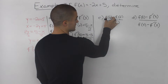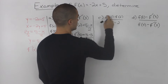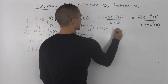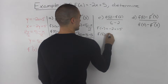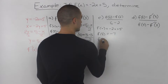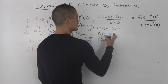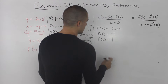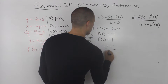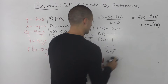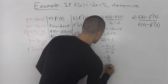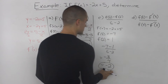Moving on to part c, we need to compute [f(6) minus f(2)] all over 6 minus 2. Let's find f(6) and f(2) separately using f(x) equals negative 2x plus 5. For f(6): negative 2 times 6 is negative 12, plus 5 is negative 7. For f(2): negative 2 times 2 is negative 4, plus 5 is positive 1. So combining: negative 7 minus 1 is negative 8, over 6 minus 2 which is 4, giving us negative 2. So the answer to part c is negative 2.